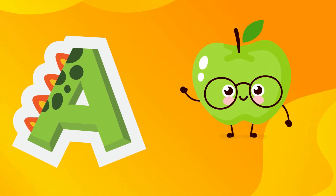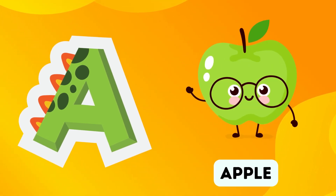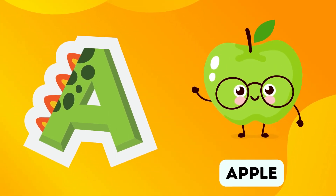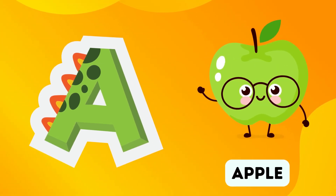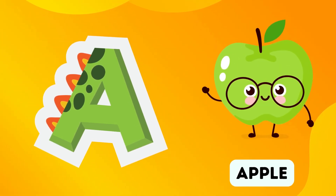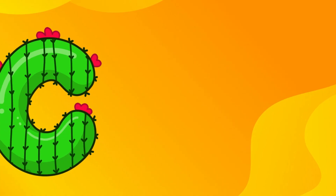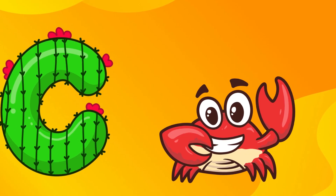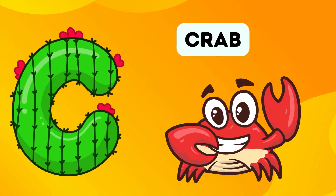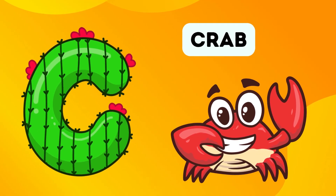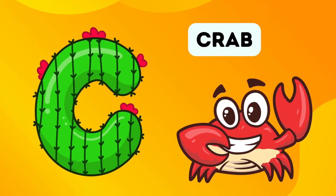A. A is for Apple. Apple. B. B is for Banana. Banana. C. C is for Crab. Crab.